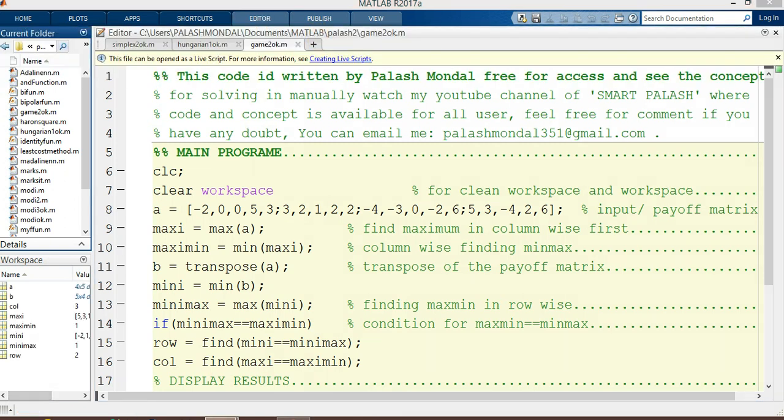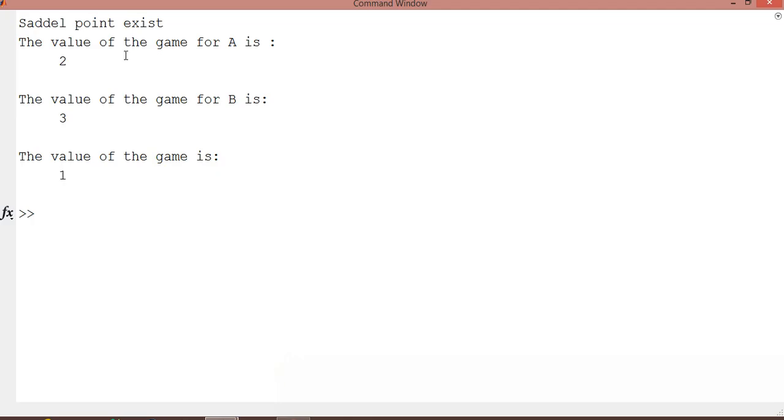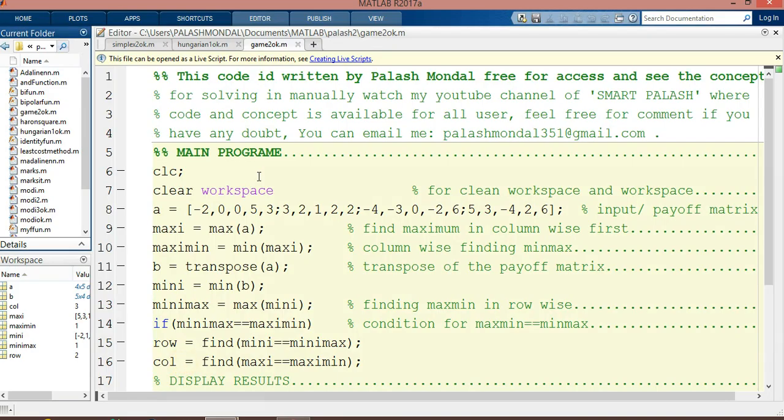Come to the command window. See the command window. It is saddle point exists and the value of the game for A is 2 and the value of the game for B is 3 and the value of the game is 1. So in this program, saddle point exists and you can also run this problem by typing, this is the name of the program. The name of the program is game2.